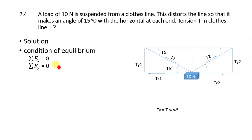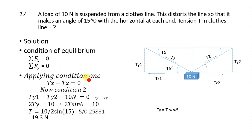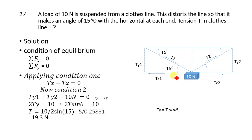The equilibrium conditions are: the sum of all forces along the x-axis equals zero, and along the y-axis equals zero. Splitting tensions T1 and T2 into components Tx1, Ty1 and Tx2, Ty2, applying condition one gives Tx1 minus Tx2 equals zero, so Tx1 equals Tx2.